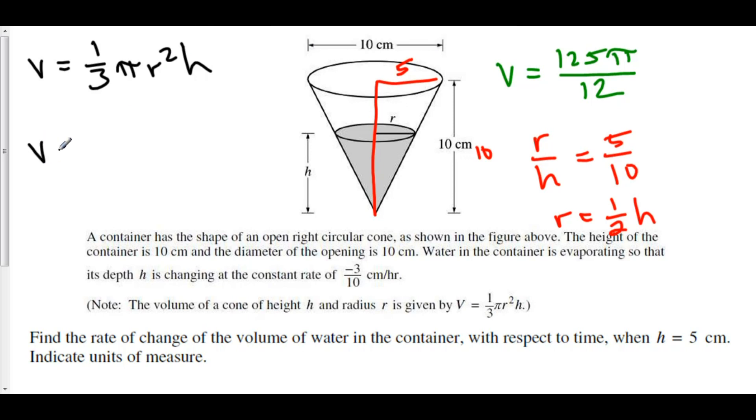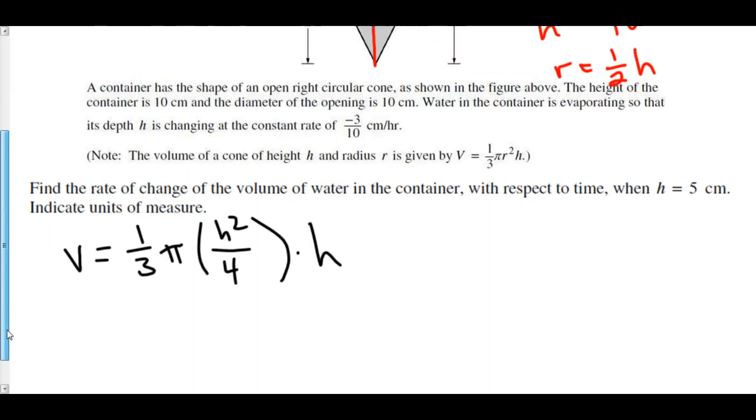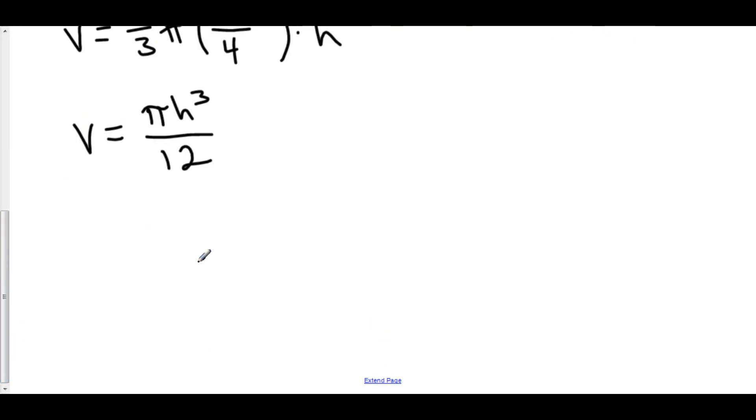Well, that means that we can substitute 1 half h in for r. Which we'll do right now. So v is equal to 1 third pi times 1 half h quantity squared times h. Well, 1 half h squared. Here we have v is equal to 1 third pi. This is h squared over 4 times h. And of course, if we combine everything on top, we have h squared times h times pi is pi h cubed over 12. And so here's a new model for the volume of this cone excluding the radius.